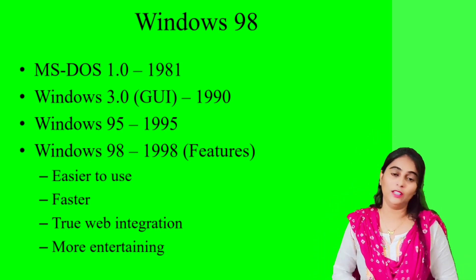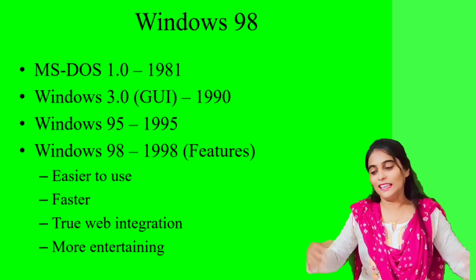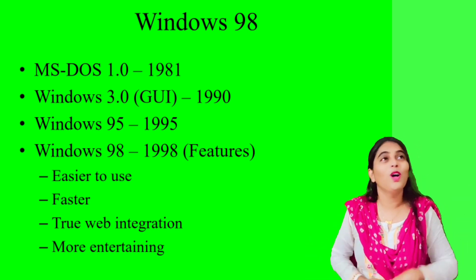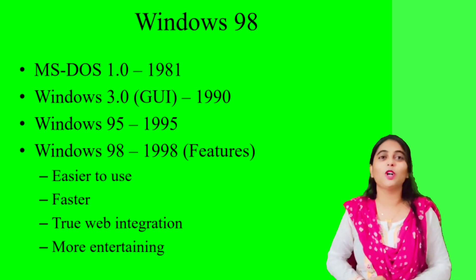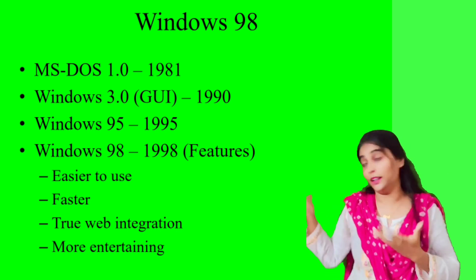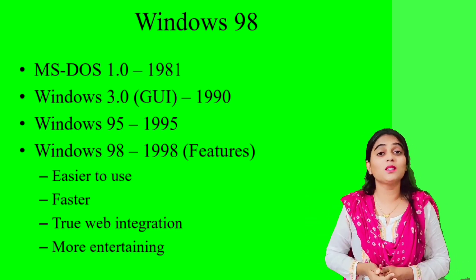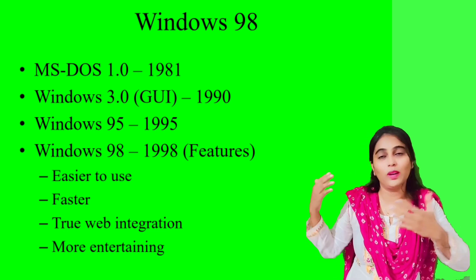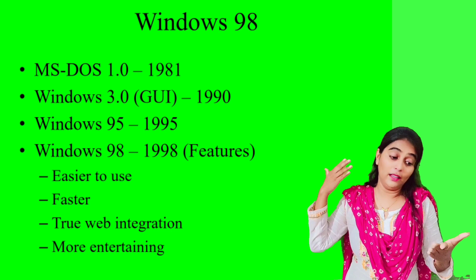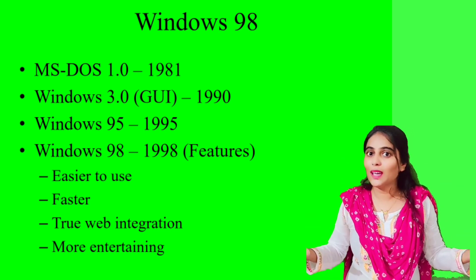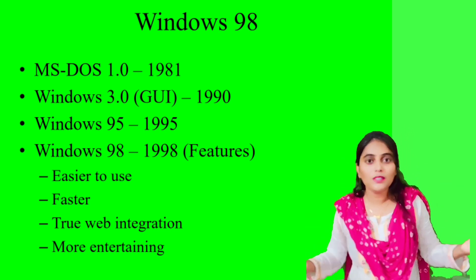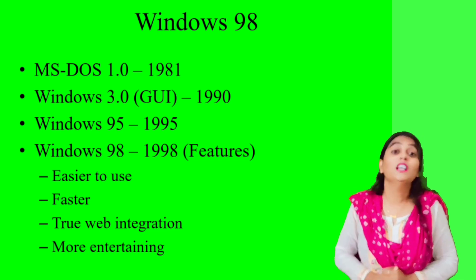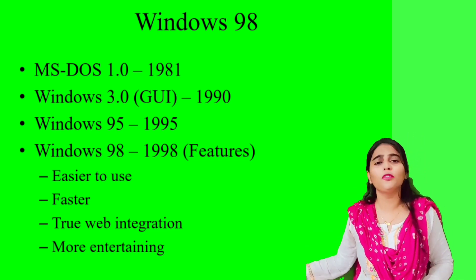The last feature is entertainment. Windows 98 was DVD compatible and supported digital audio and video, including movies — a first at the time. These four features — easier to use, fastest, truly web integrated, and entertainment — are why Windows had so much value in the market.